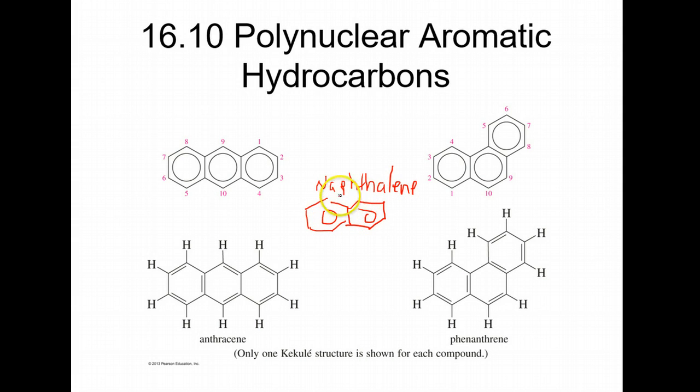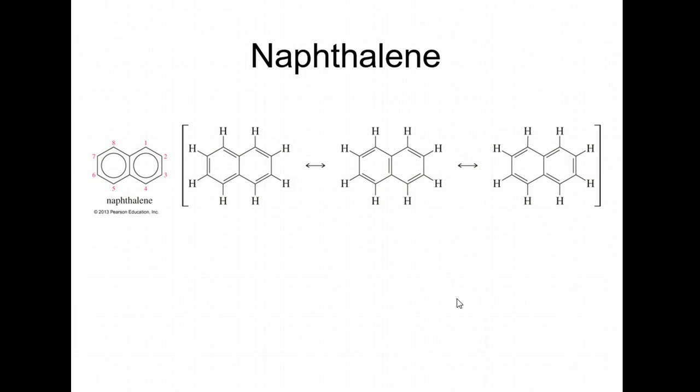Naphthalene is two aromatic rings hooked to each other. This is actually mothballs - that's the main ingredient in mothballs. These are also aromatic compounds. This is aromatic, this is aromatic. You don't really say the whole thing is aromatic, you just say all the rings are, therefore the whole thing is.